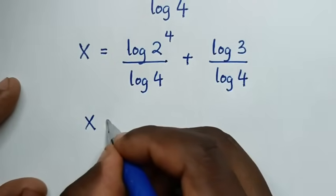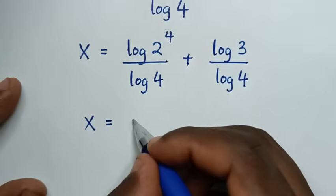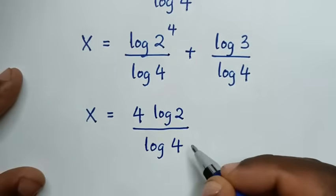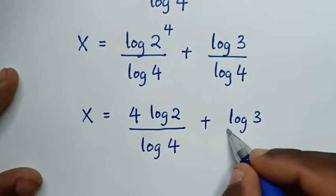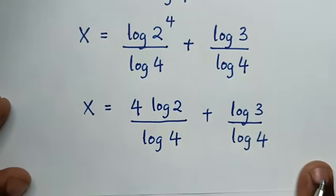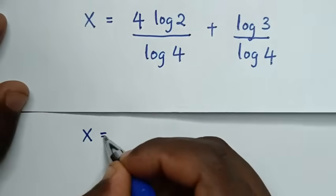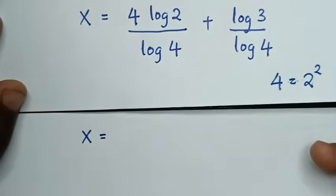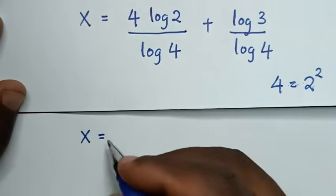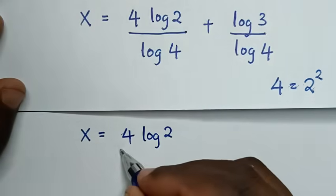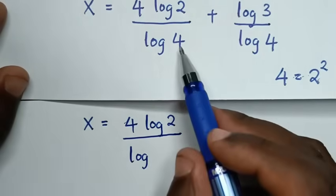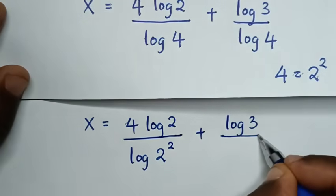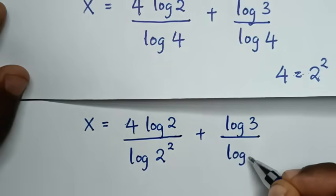In the next step, x is equal to — the power of 4 moves to the base — so it will be 4 log of 2 over log of 4, plus log of 3 over log of 4. Now 4 is equal to 2 square, so substituting 2 square: it will be 4 log of 2 over log of 2 square, plus log of 3 over log of 2 square.